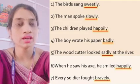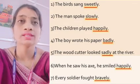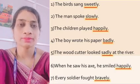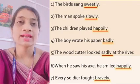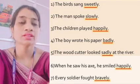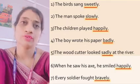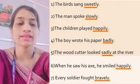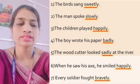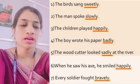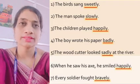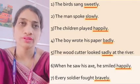Next, 'how' means kaisi — calmly, beautifully, excitedly, happily, joyfully, sadly, slowly — these types of words give the answer of the question 'how'. Next is 'how often' — matlab kitni baar hua hai — like always, daily, frequently, never, once, rarely, seldom, sometimes — yeh saare words answer dete hain question ka: how often?